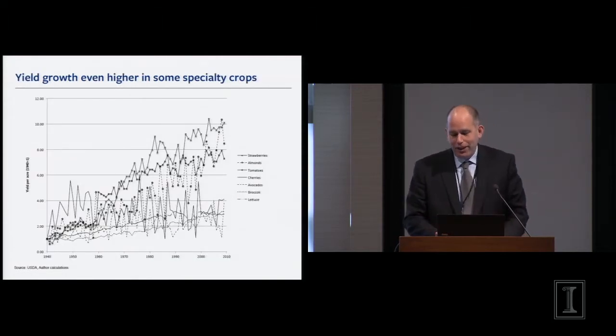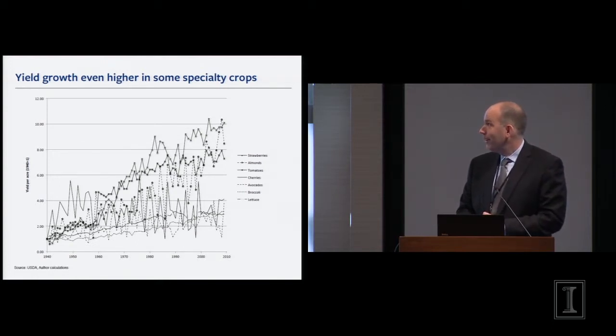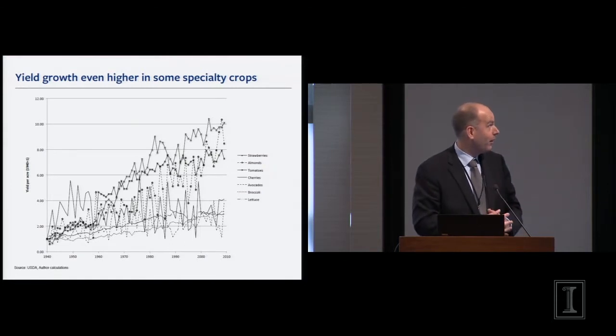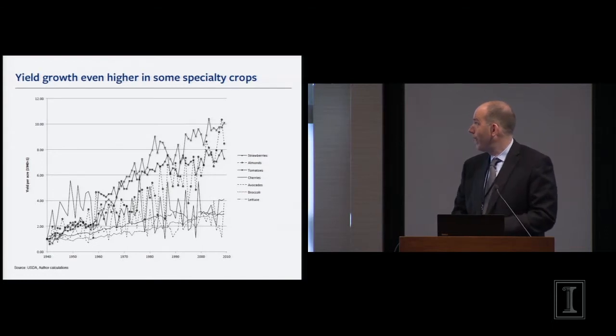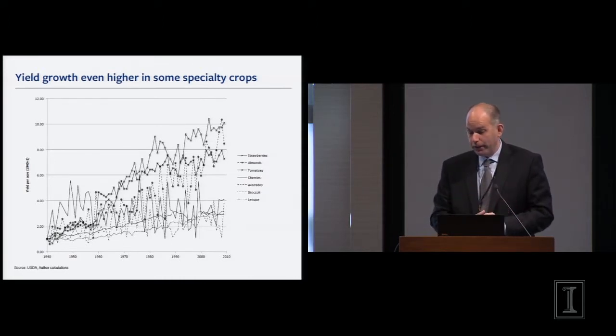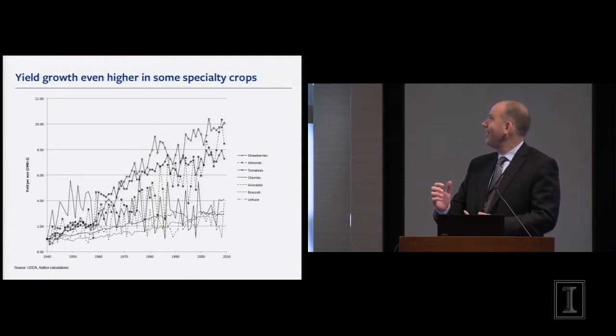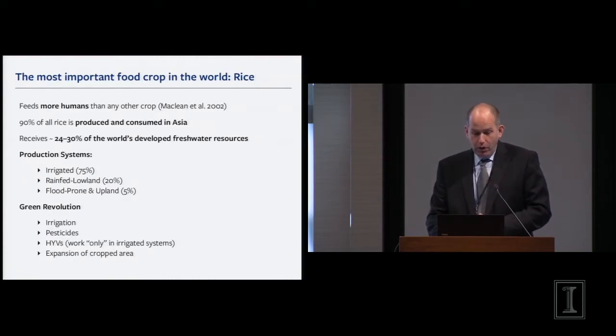Just one more yield picture. I'm from California, actually that's where I live now. If you look at specialty crops since 1940, the Y-axis has a 1 normalized by 1940 yields. For some specialty crops we've increased yields tenfold, which is just even more impressive. So what I want to talk about is not strawberries, even though they're delicious, they're just not that important. What I want to talk about is the most important food crop in the world, which is rice.